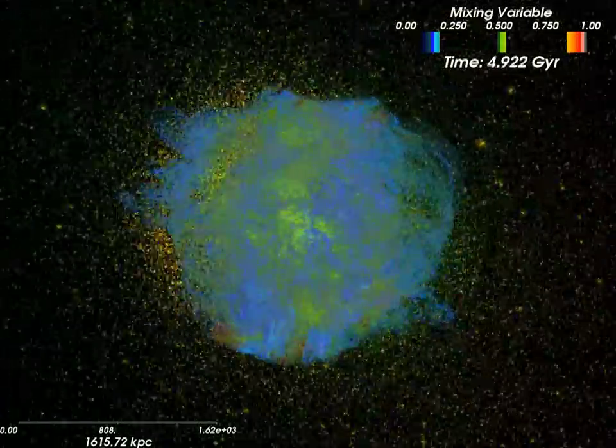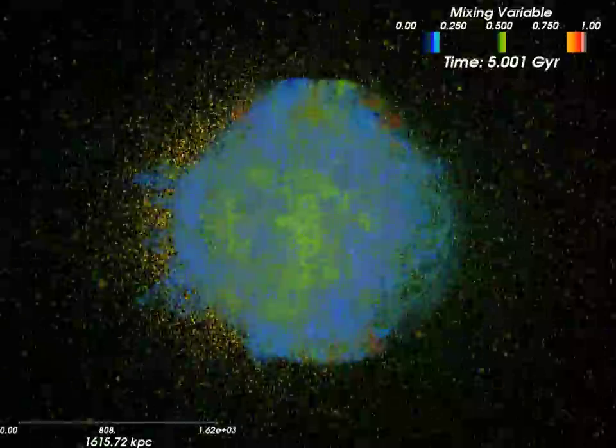The two dark matter cores slip past and through each other, whereas the two gas components interact and mix.